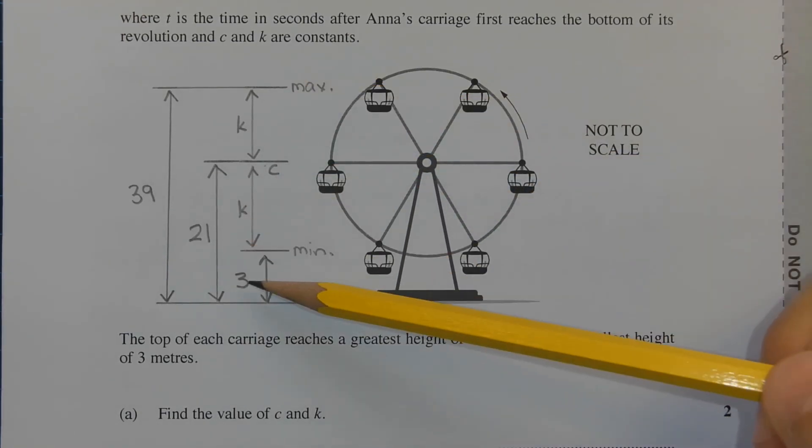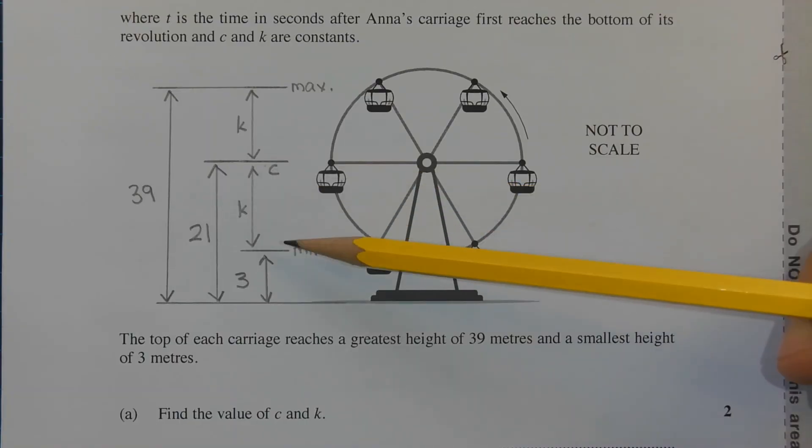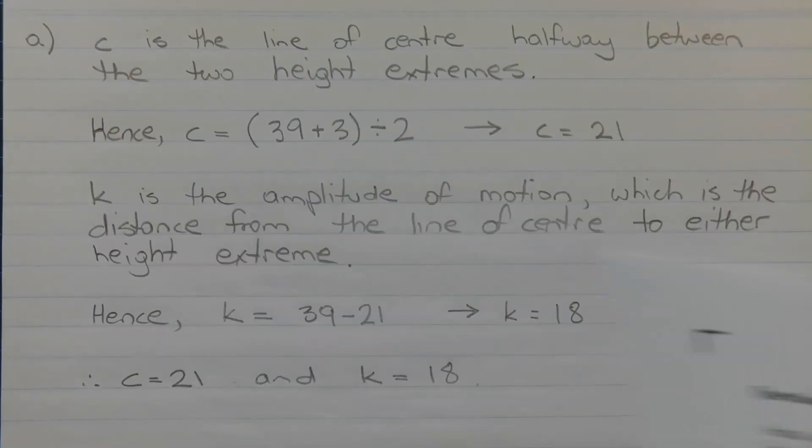So the average of 3 and 39 is 21. And the distance between 21 and 39 or 21 and 3 is 18. And I've shown the working out here. C is the line of centre halfway between the two height extremes. Hence c equals (39 + 3)/2, so it's an average. So c equals 21.